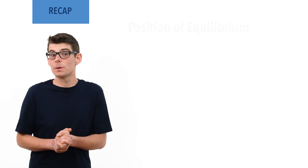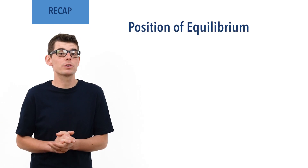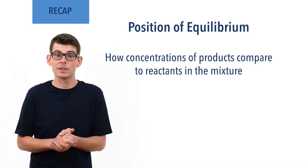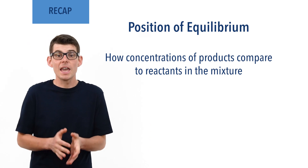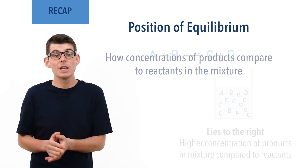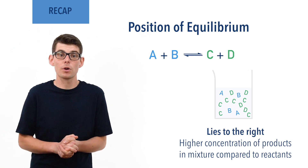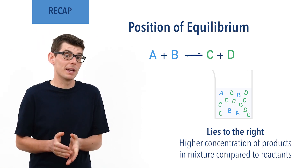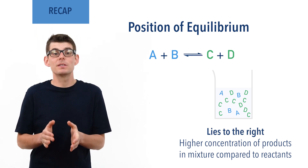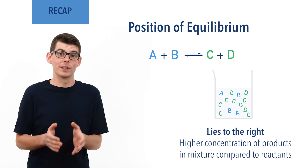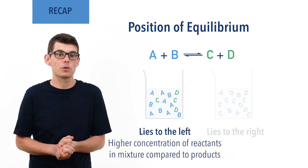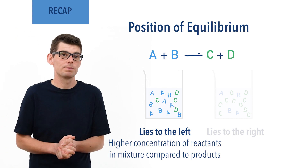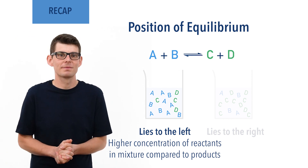A position of equilibrium refers to how the concentrations of reactants and products in the mixture compare to each other. A position that lies to the right means a higher concentration of products compared to reactants, and a position that lies to the left means a higher concentration of reactants compared to products for the forward reaction. Recap done? Let's go!